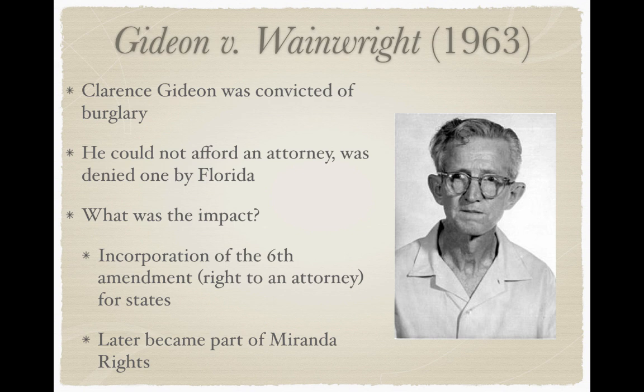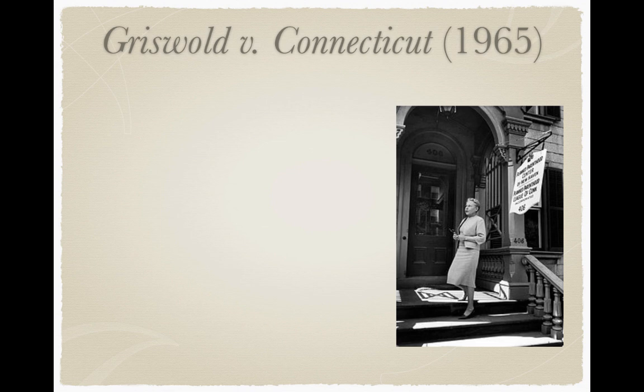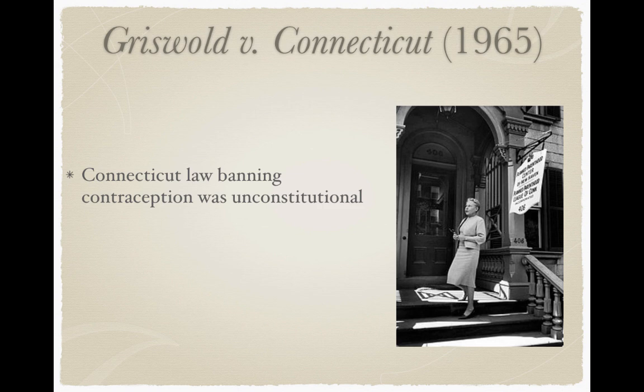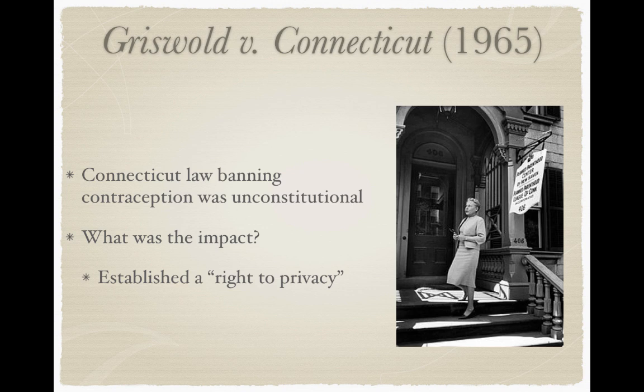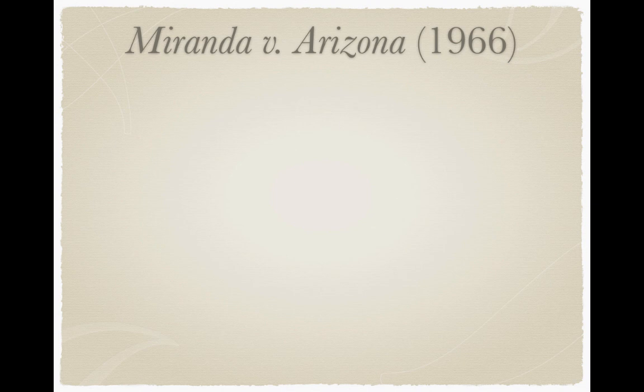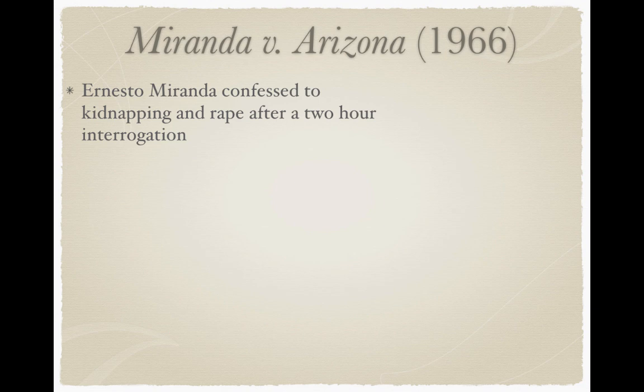Griswold v. Connecticut from 1965: Estelle Griswold challenged a Connecticut law banning contraception. The Supreme Court said the law was unconstitutional and that birth control was legal. Very importantly, the Supreme Court argued that a person has a right to privacy, even though it's not explicitly mentioned in the Constitution. This is very important because it will be used in a later upcoming Supreme Court decision.